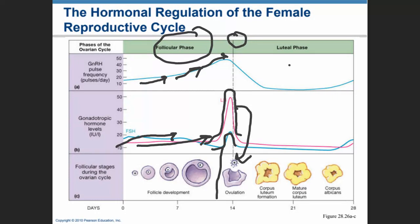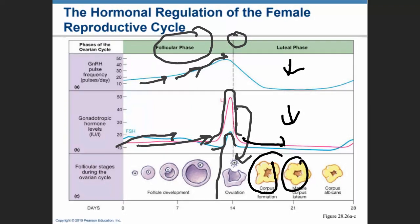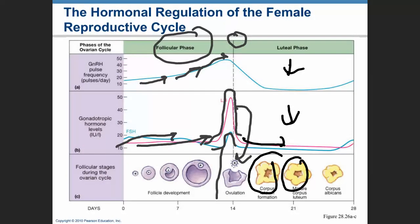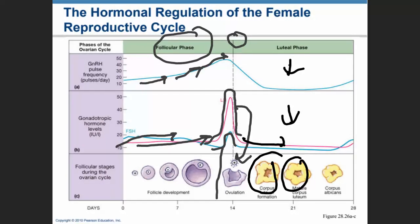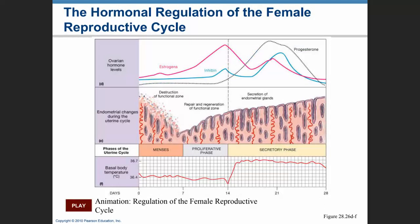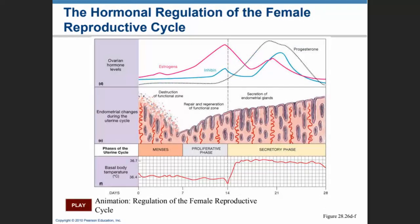Days fourteen through twenty-eight, we have the luteal phase in which levels of GnRH diminish. With that, levels of FSH and LH also diminish, which prevents a new cycle from starting in case pregnancy happens. The corpus luteum is now the one secreting estrogen and progesterone. If pregnancy doesn't happen, the corpus luteum degenerates into a corpus albicans.